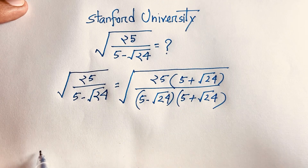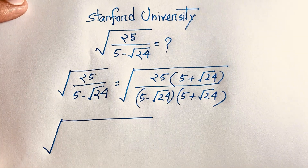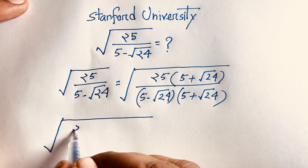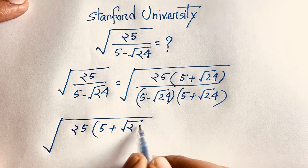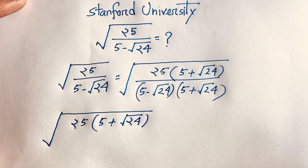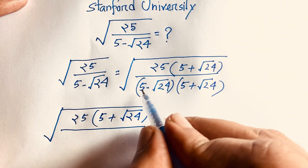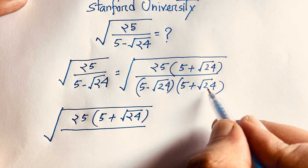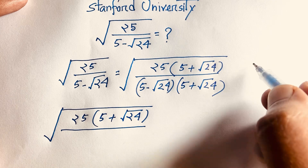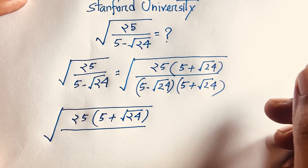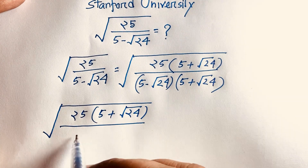Now in this expression, the numerator is square root of 25 times (5 plus square root 24). In the denominator, if we let a = 5 and b = square root 24, then (a minus b)(a plus b) equals a squared minus b squared. According to this rule, the denominator becomes 5 squared minus (square root 24) squared.